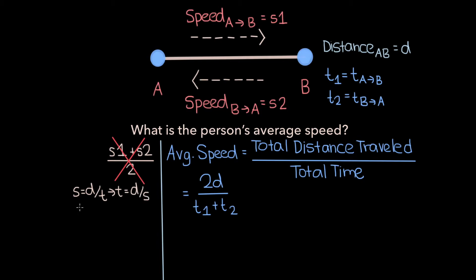Based on this formula we can determine that T1 is equal to D over S1. The time it takes for the person to get from A to B is equal to the distance between A and B divided by their average speed from A to B. We can apply the same logic to T2 and we would get that T2 is equal to D over S2.